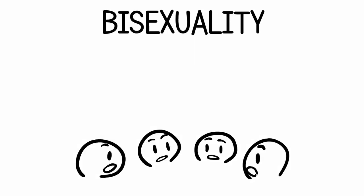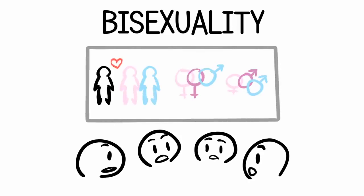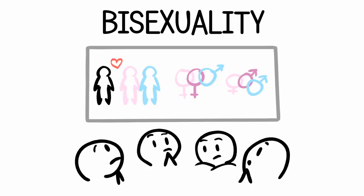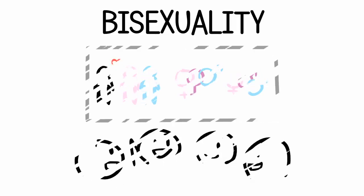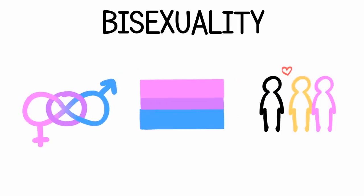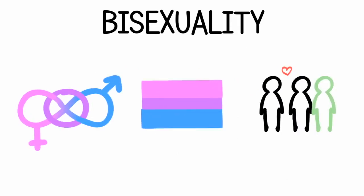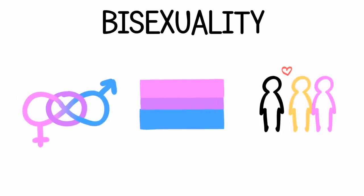One: bisexuality. The definition for bisexuality is actually something that's debated. Originally the standard definition was attraction to both genders. However, as understanding of gender has evolved, people have argued for an evolved definition. Some use the definition of attraction to your own and other genders, to incorporate non-binary genders within its definition.